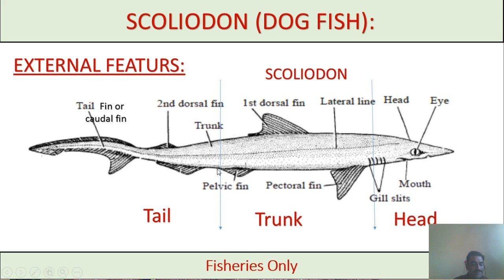The tail region is the portion of the body from the cloacal opening to the tail end. The tail is heterocercal — also called the caudal fin — meaning both the upper lobe and lower lobe of the caudal fin are unequal, with the upper lobe larger than the lower lobe.